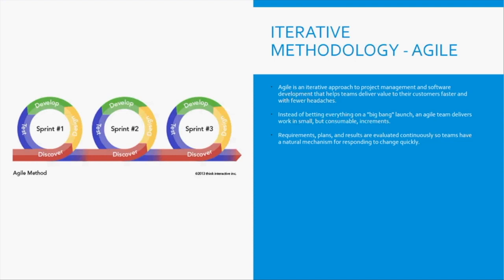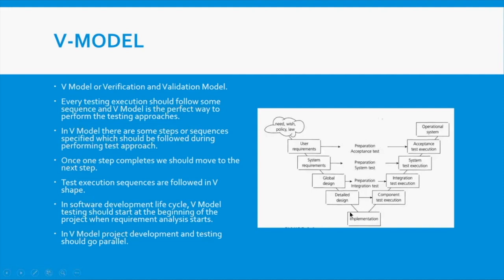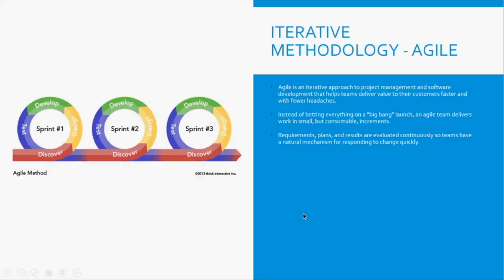Agile is an iterative approach to project management and software development. It helps deliver applications faster and with fewer headaches. Instead of implementing the whole system at once like in Waterfall or V-model, in Agile you do everything in iterations — you divide your application into different parts and do requirements gathering for each part in chunks.